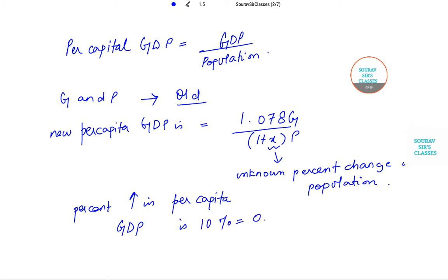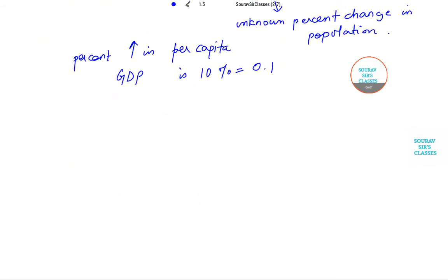So we can rewrite the above as 1.078 divided by (1 + x) will give me 1.1, isn't it? Now if you solve this for x, you get 1 + x is equal to 1.078 divided by 1.1. And this, if you solve it, you will get 0.98. So x is equal to minus 0.02.